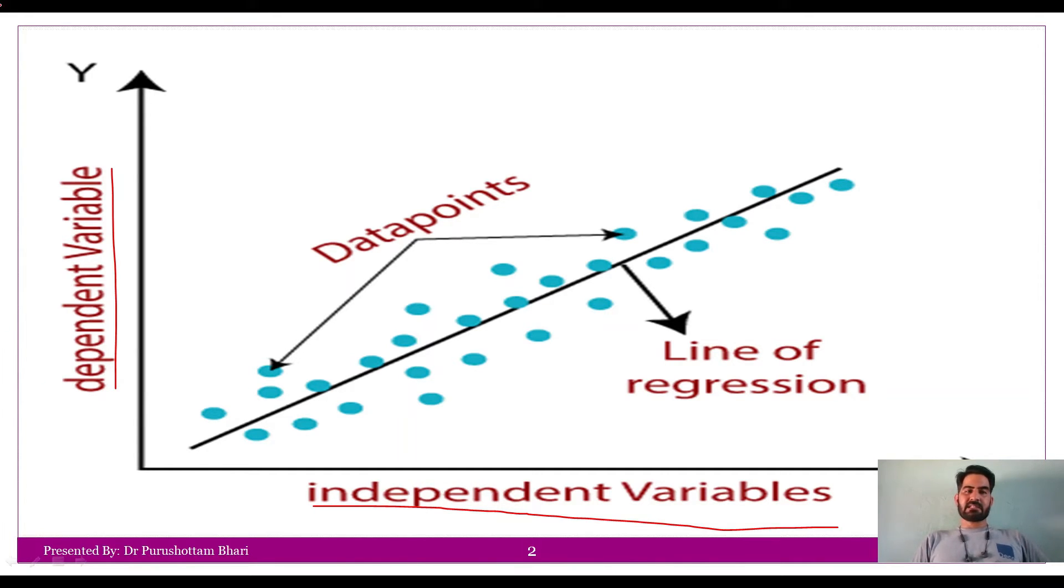You can simply understand: the variables which are given as input, we call them independent variables. Which variables? Input variables. And what will give us the output prediction - like in the sales example, all the factors I told you were input variables, and the prediction that came out, the sales that came out - that will be the output variable. So dependent variables are output variables.